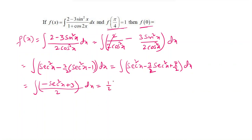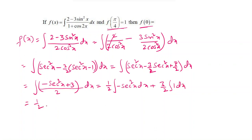So the integral equals (1/2) times integration of minus sec²x dx plus (3/2) times integration of 1 dx. Therefore f(x) equals (1/2)(minus tan x) plus (3/2)x plus c, that is: f(x) = minus (1/2)tan x plus (3/2)x plus c.